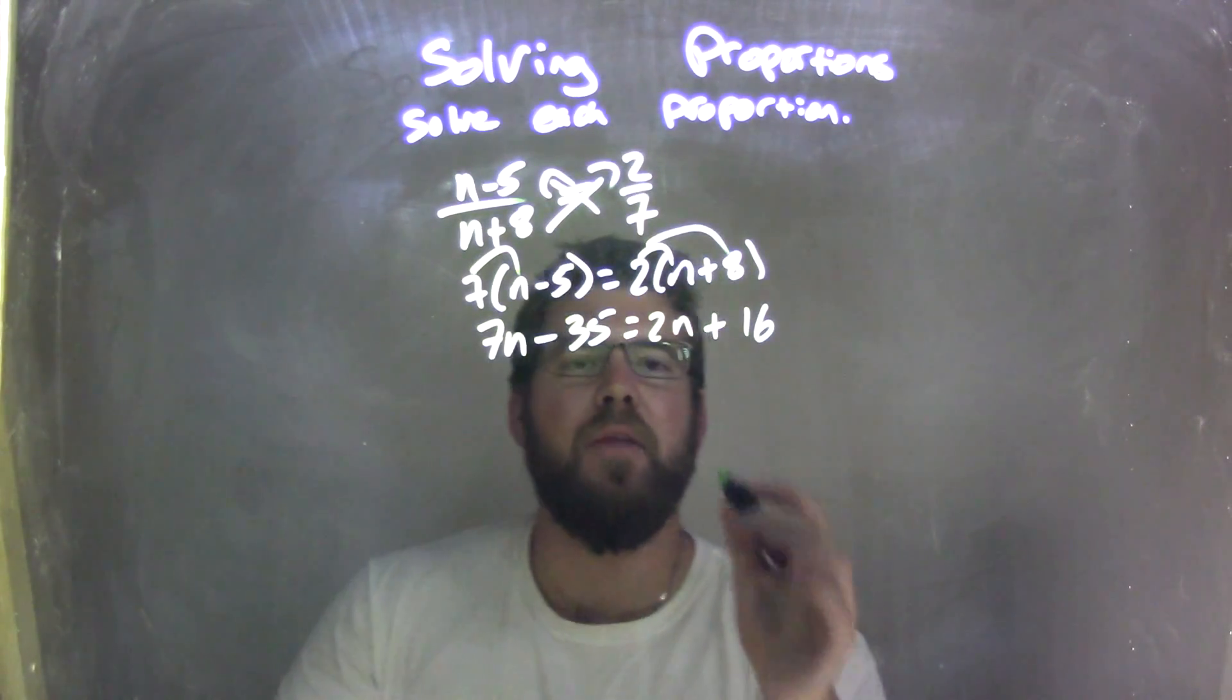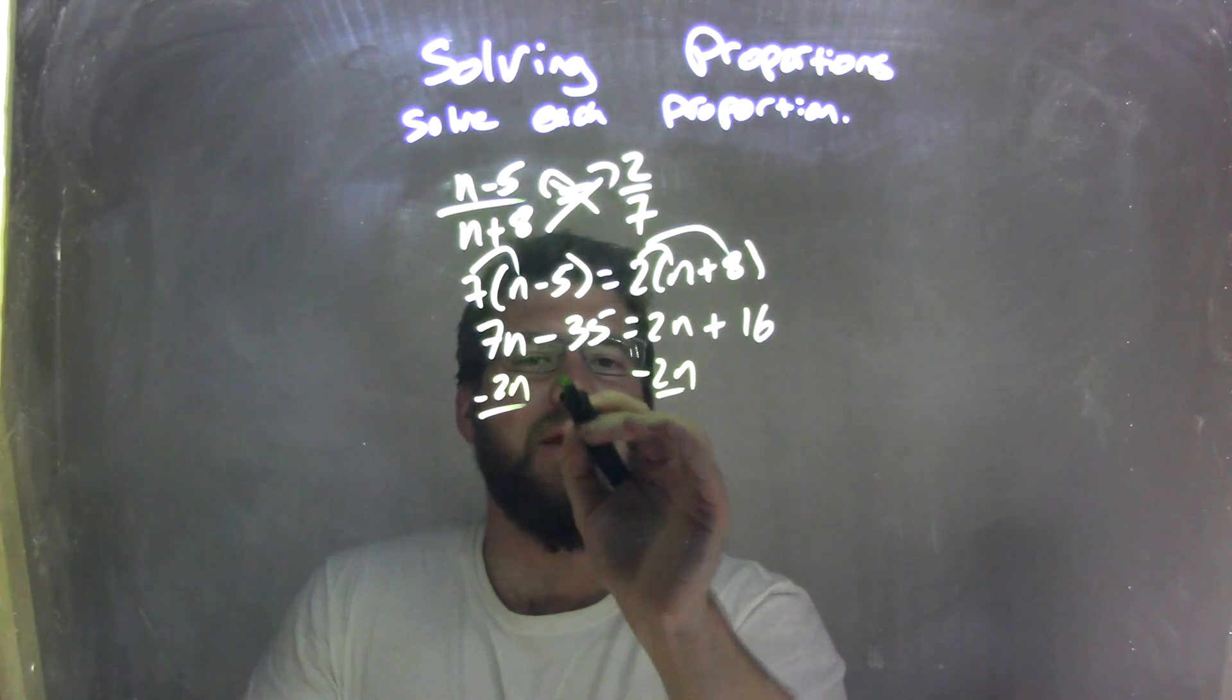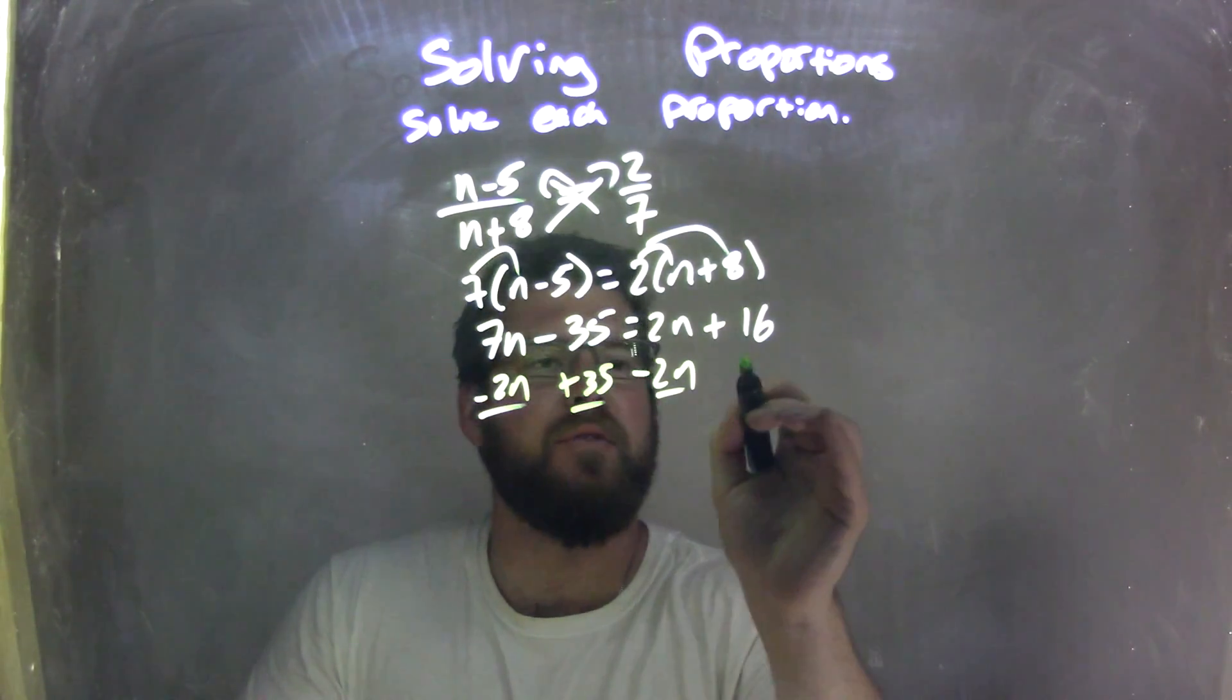Let's bring our like terms together. So I'm going to subtract the 2n to both sides, and I'm going to add a 35 to both sides, right?